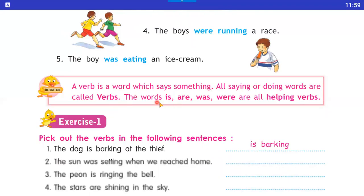The words is, are, was, were are all helping verbs. Jo humara main verb hota hai, uske saath hum yeh jo four words lagate hain — is, are, was, were — yeh helping verb kehlate hain.